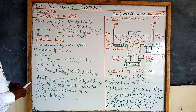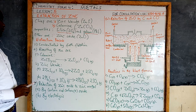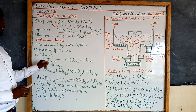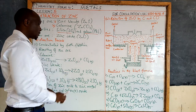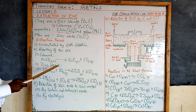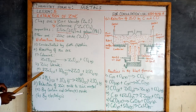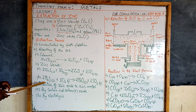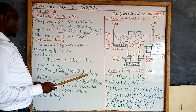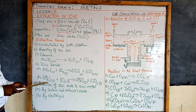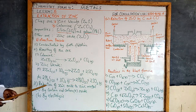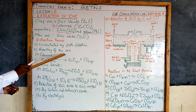Step two will be roasting the ore. Calamine, when heated — that is zinc carbonate — decomposes to form zinc oxide and carbon dioxide. While zinc blende, when heated, because of the impurities, there will be two reactions: zinc sulphide will be oxidized to zinc oxide and sulphur dioxide, while lead sulphide will be oxidized to lead oxide and sulphur dioxide gas.